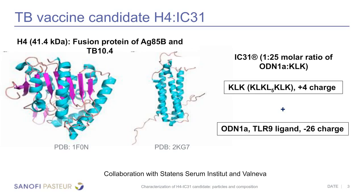IC31 adjuvant consists of KLK, which has a plus four net charge, and ODN1A, which has a minus 26 charge. They are combined in a molar ratio of 1:25 where KLK is in excess, making the total surface charge of IC31 adjuvant positive — a cationic synthetic adjuvant. We are working on this candidate vaccine in collaboration with SSI (Staten Serum Institute), Valneva, and Sanofi Pasteur.